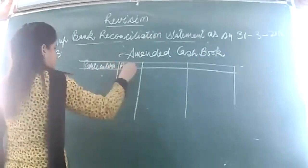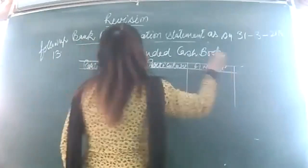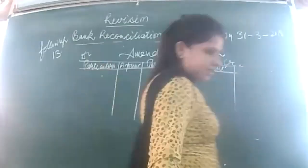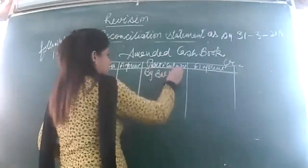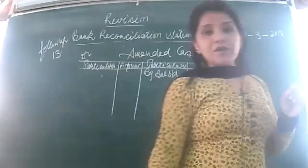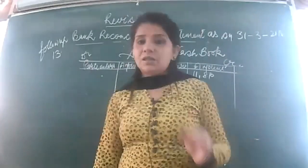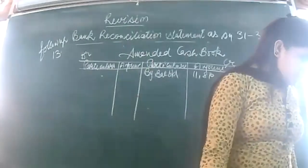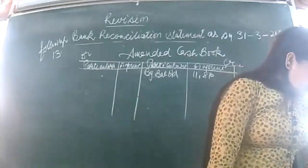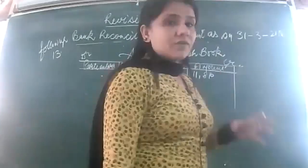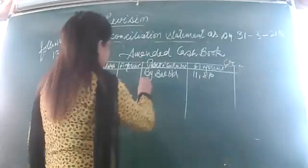Format: particulars column, amount columns for debit and credit. Let's begin. Since it is a credit balance, I write balance brought down on the credit side. Now I search for items not yet entered in the cash book. A check was issued, already recorded in the cash book, and the bank charged interest — the bank charged rupees 880 and it was not in the cash book. Since this reduces my balance, I write it on the payment side: 'by interest charges' — 880.